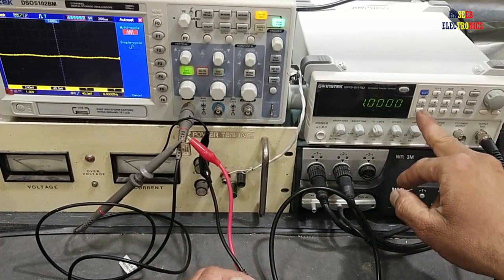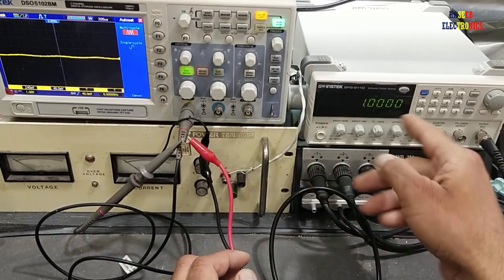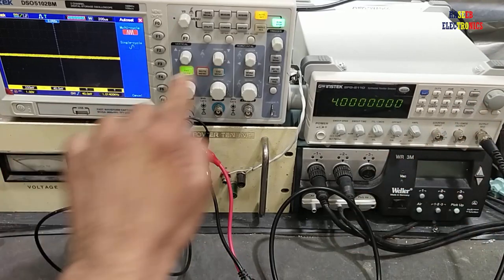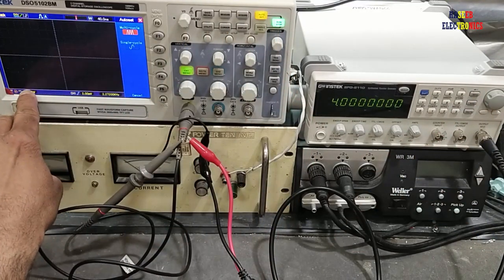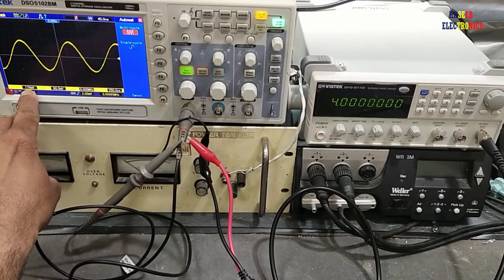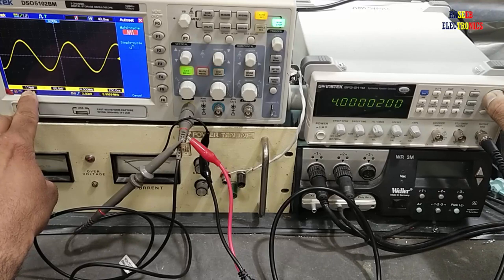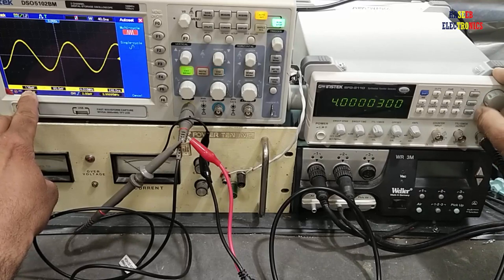So we will move to a closer frequency: 4 megahertz. The voltage level is 174 millivolts. Now we will increase the frequency to 4.0309. When it reaches the closer range, the amplitude of the signal will increase.